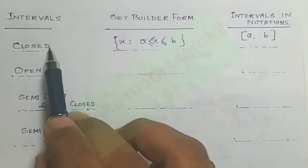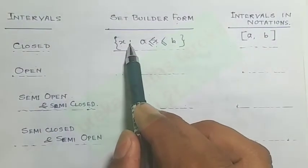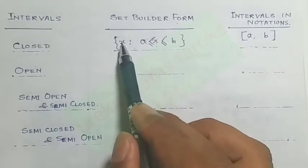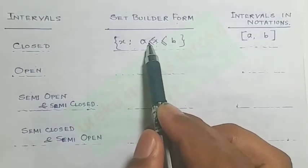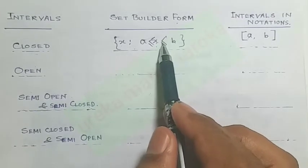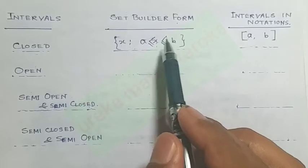For the closed interval in set builder form, we use the less than or equal to symbol. We write x such that x lies between a and b, where a and b are included.